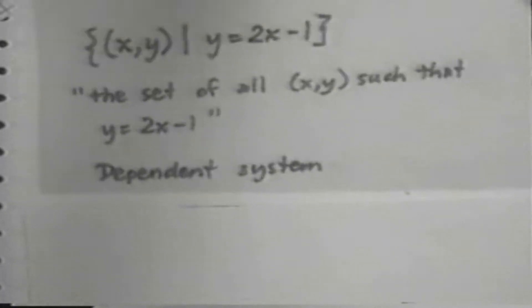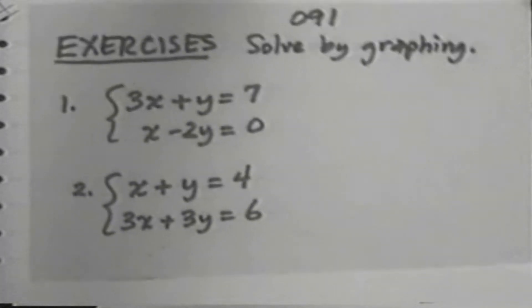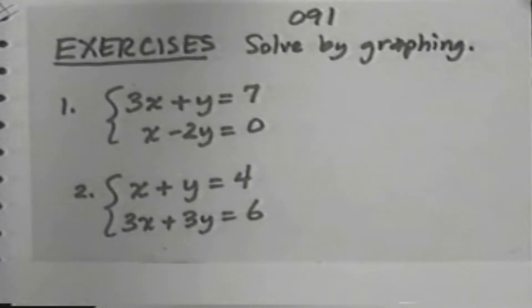Now it's time for you to do some exercises. And I'm giving you two exercises. Your instructions are solved by graphing. Exercise 1. 3x plus y equals 7. 3x plus y equals 7. x minus 2y equals 0. x minus 2y equals 0.